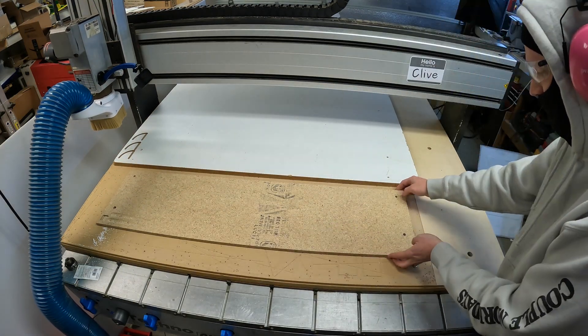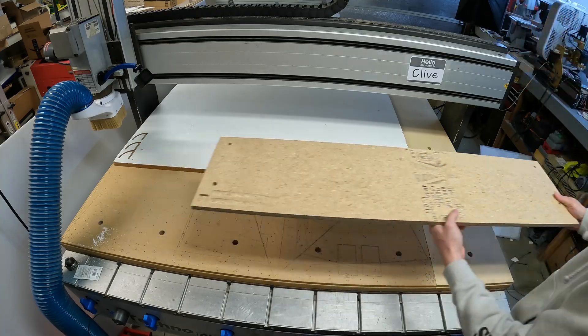That went just fine so now let's set up the second side. For this we are going to set the origin on the original reference hole, keeping in mind that we flip the board vertically.